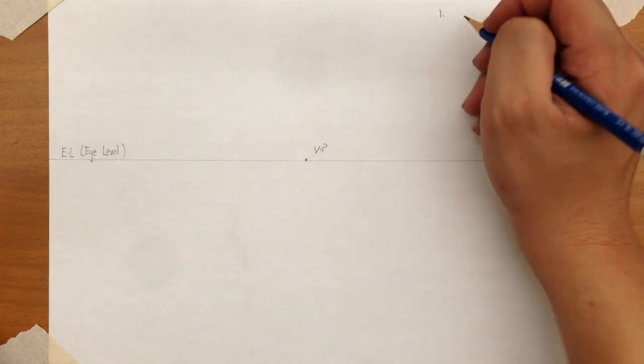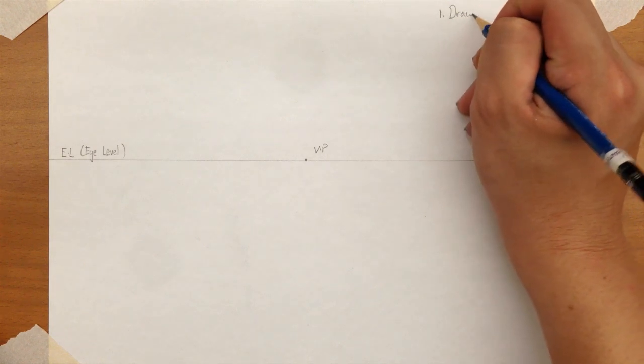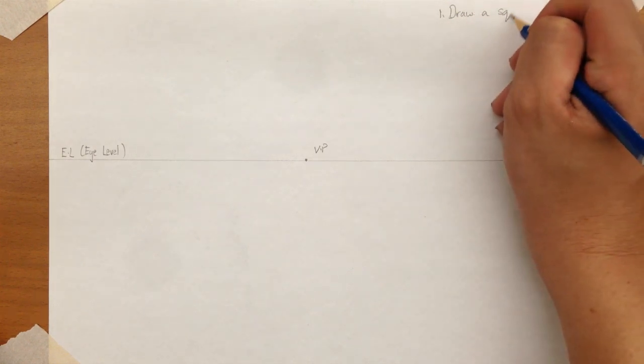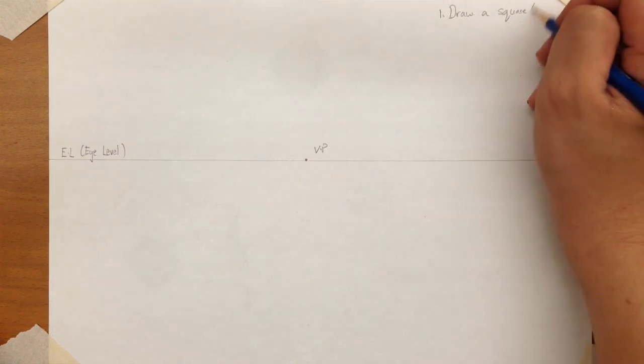How do you start drawing a box? There are three steps. The first step is to draw a rectangle or square first. Step 1, draw a square or rectangle.